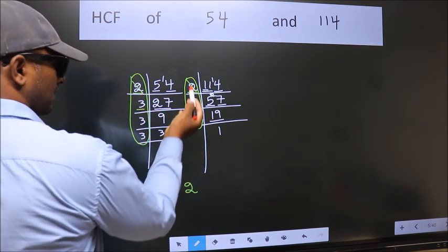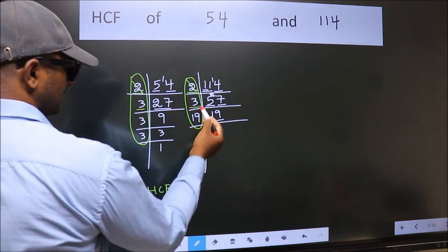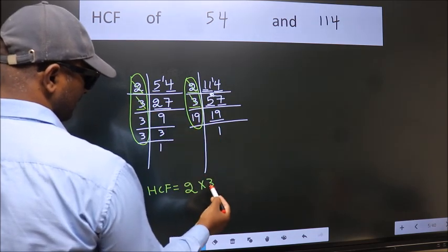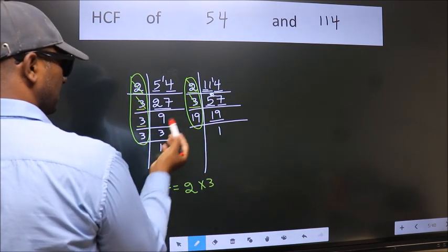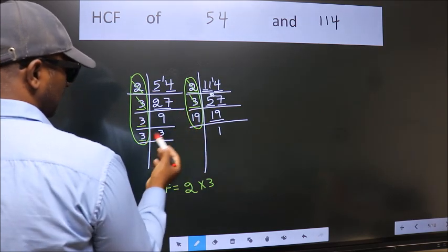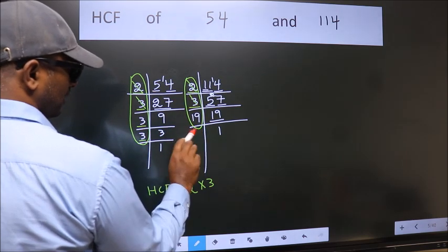So, cut 2 right here. Next number 3. Do we have 3 here? No. Next number 3. Do we have 3 here? No.